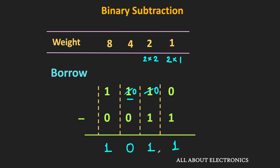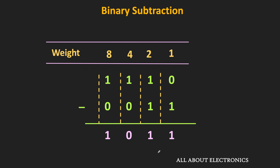By converting these binary numbers to decimal equivalents, we can confirm the subtraction. The decimal equivalent of 1110 is 8 plus 4 plus 2, equal to 14. The decimal equivalent of 11 is 3. So 14 minus 3 is 11. And if we convert 1011 to decimal, it is also 11. That means our binary subtraction is correct.